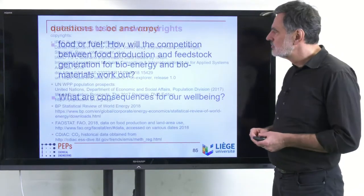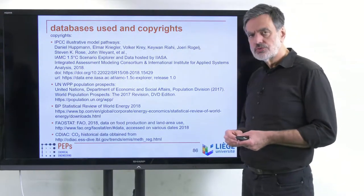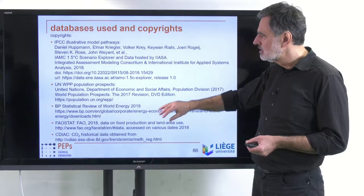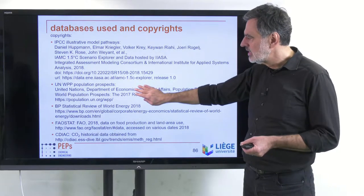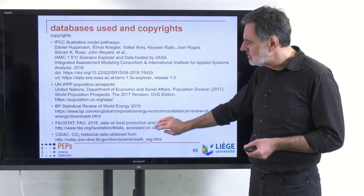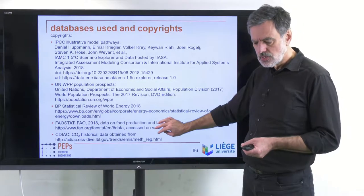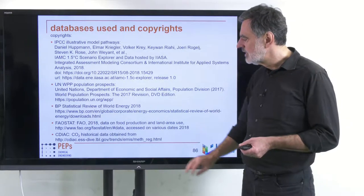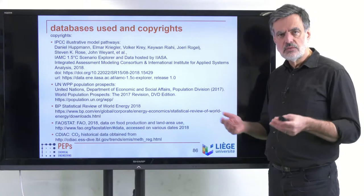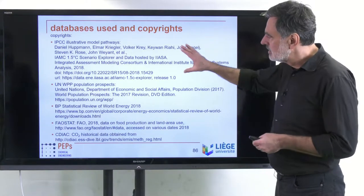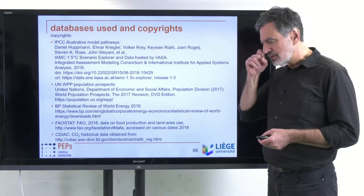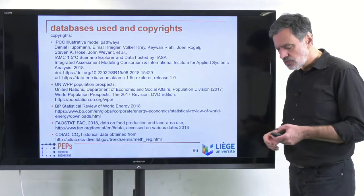I have been using a variety of literature and databases to work out the corresponding scenarios: the IPCC data on illustrative model pathways, the United Nations world population prospects, the BP statistical review of world energy 2018, the FAOSTAT database on foodstuff and land area use, and the CO2 historical data from the CDIAC database. These links are all publicly available. If the text is too small to read, the slides will be uploaded to my university website.